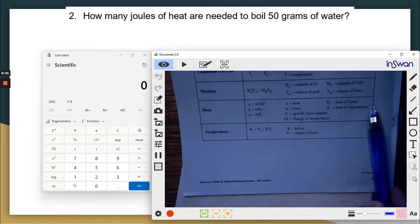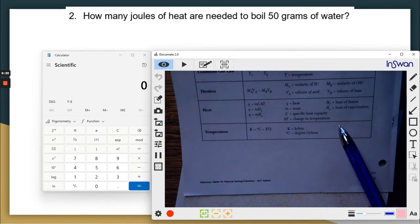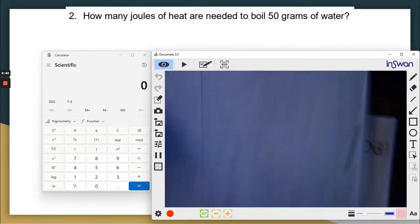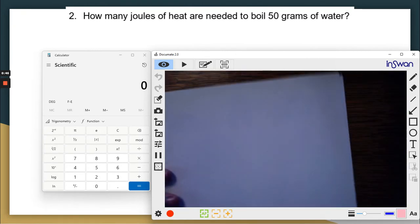All right, so boiling. I don't see boiling anywhere here, but boiling means going from a liquid to a gas. A gas is a vapor, so heat of vaporization. I'm going to use this formula. Let's go back and write the formulas.